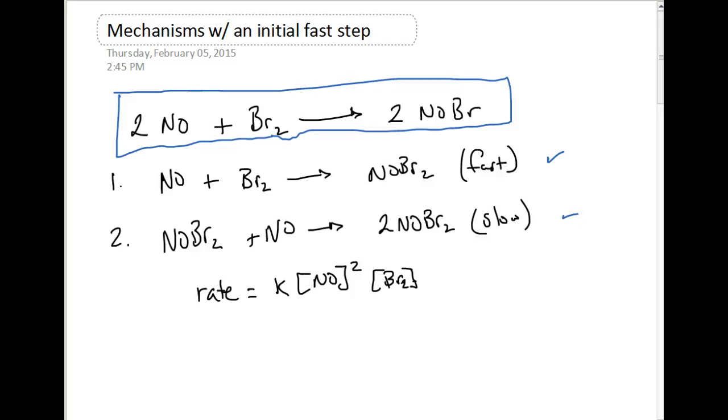And they're telling us that experimentally our rate law is rate equals k[NO] to the second order and [Br2] to the first order. So let's apply what we know so far and see if we can come up with some information.